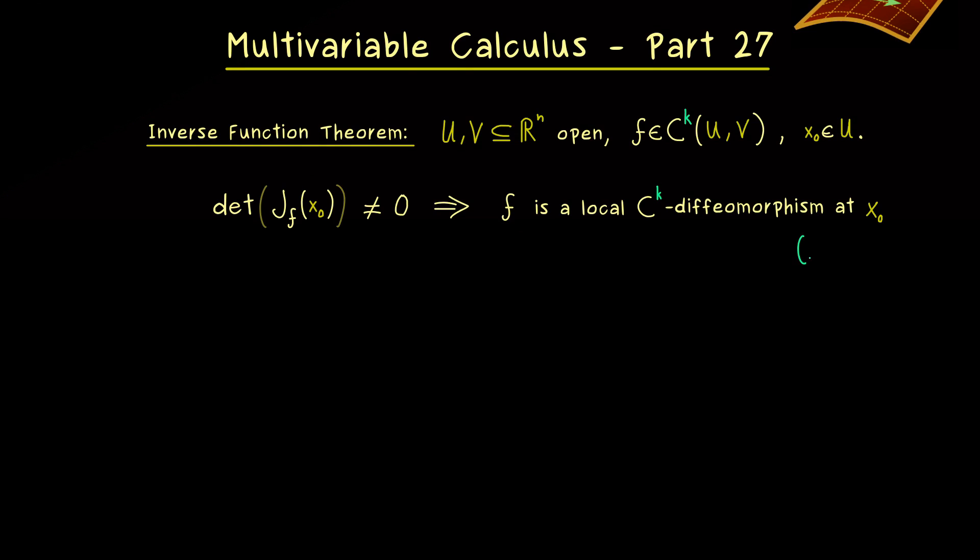And please don't forget, k here is always a natural number or the symbol infinity. Indeed, often we have C∞ functions and now we know that the local inverse is also a C∞ diffeomorphism.